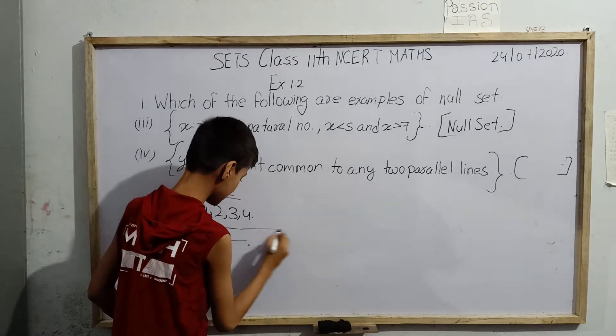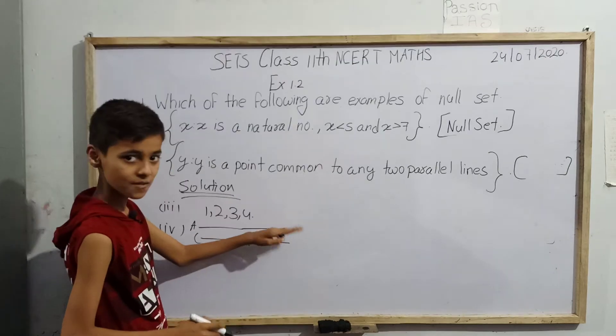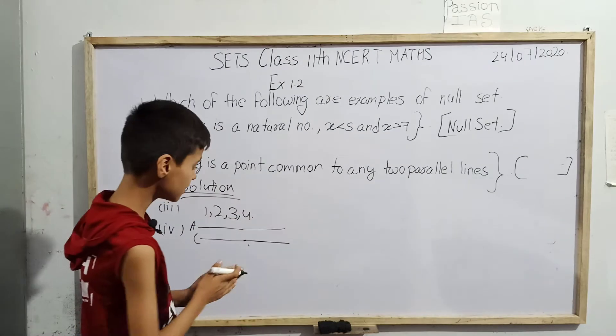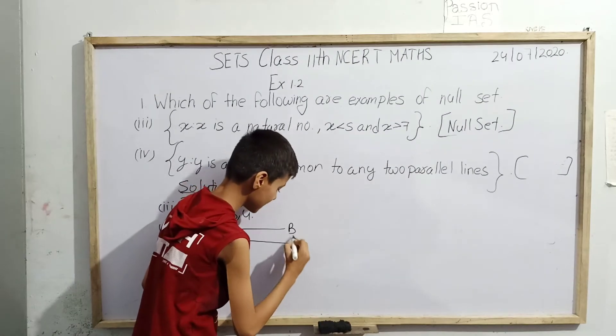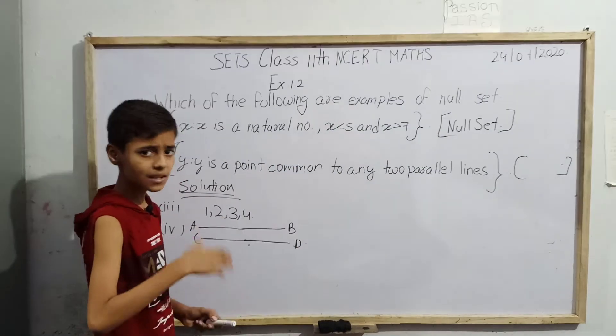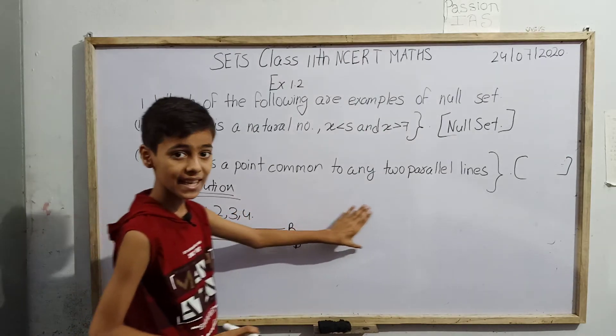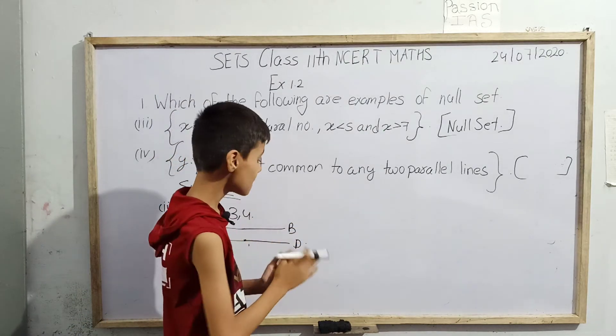If we extend AB and CD a little, their length will increase but we don't have to change their position. They will also now remain parallel. Even now is there any point common to AB and CD? No.